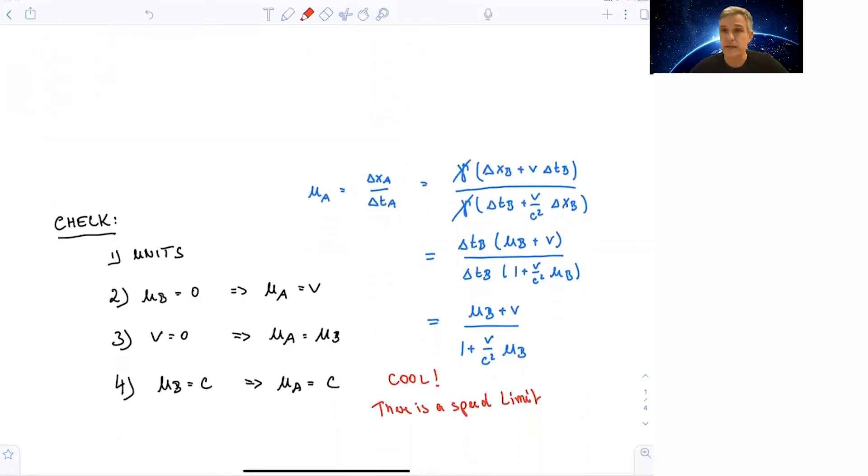If you calculate now the velocity as seen by Alice, delta xA over delta tA, that's given by gamma times delta xB plus V times delta tB over gamma times delta tB plus v over c squared delta xB. But we can cancel the gammas and take out delta tB out of the brackets, and then we find uB plus v over 1 plus v over c squared uB. This looks like an addition of velocities with a correction factor 1 plus v over c squared uB.